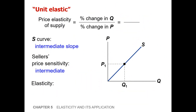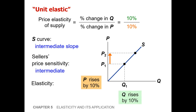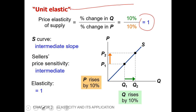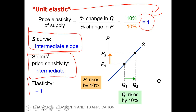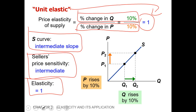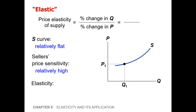Now let's move on to unit elastic. Just as with the demand curve, where unit elasticity was one, here the price elasticity of supply is also equal to one. Price rises by 10 percent and quantity also rises by 10 percent, so 10 over 10 equals one. The supply curve has an intermediate slope, sellers' price sensitivity is intermediate, and elasticity equals one. This means as the price level changes by 10 percent, the quantity also changes by 10 percent.